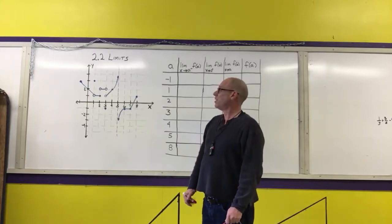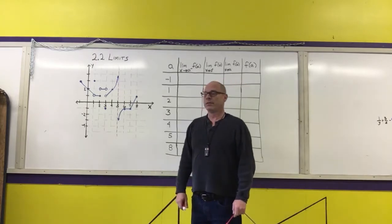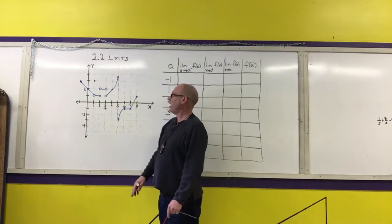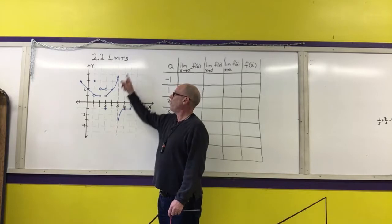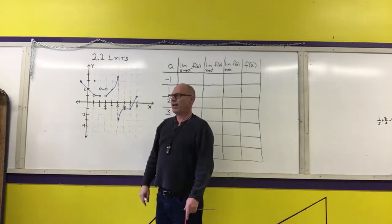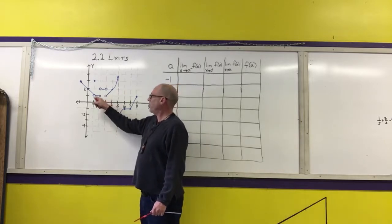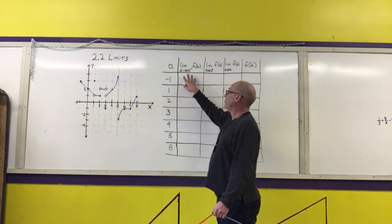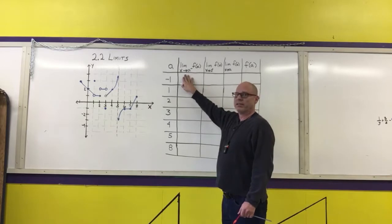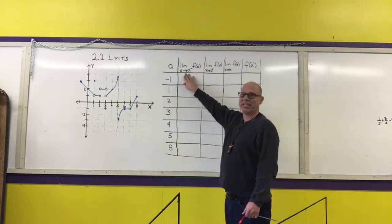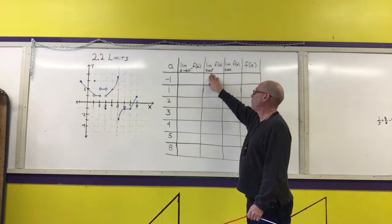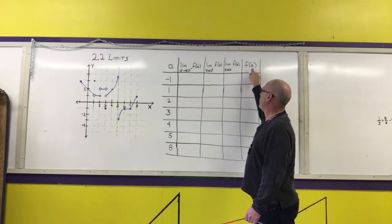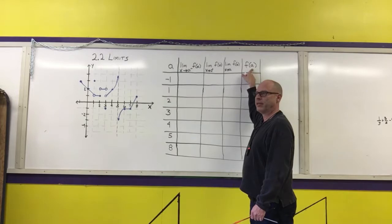In Chapter 2, we learned to discuss the limit of a function. In Chapter 2.2, we discuss the graphical definition of a limit, which is the y-value that the function approaches as x approaches particular values. We have three types of limits: approaching an x-value from the left, from the right, or from both directions. We'll also do an algebra problem to find the y-value at a particular x.